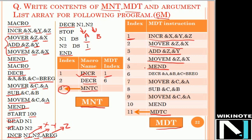INCR ends at MDT location 5. The second macro DECR starts at MDT location 6, so its MDT index is written as 6. All model statements for DECR are copied into the MDT. After copying those statements, the MDTC has a value of 11, at which point a third macro could begin. In this way, the MNT and MDT are formed. This is the output of pass one — generating the MNT and MDT.